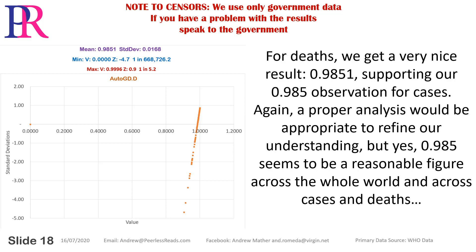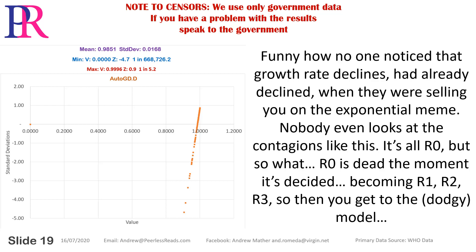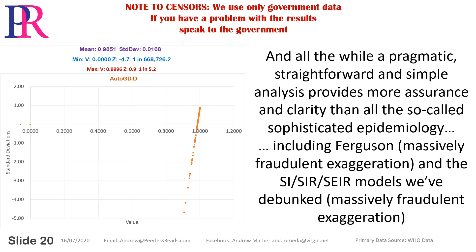For deaths we get a nice result: 0.9851, supporting our 0.985 observation. For cases, again a proper analysis would be appropriate to refine our understanding, but yes, 0.985 seems to be a reasonable figure across the whole world and across cases and deaths. Funny how no one noticed that growth rate declines had already declined when they were selling the exponential narrative. Nobody even looks at contagions like this — it's all R0, but R0 is dead the moment it becomes R1, R2, R3.